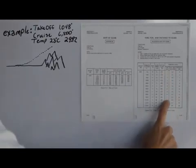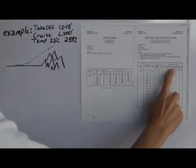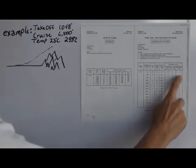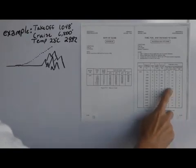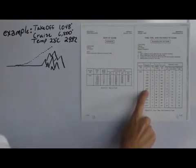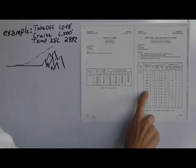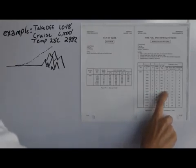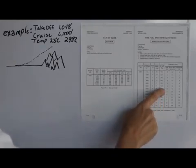Then it gives us our time used to climb that high, and then the fuel used to climb that high, and finally the distance. Since we took off from 1,000 feet and we're going to 6,500 feet, it says that if we went to 6,500 feet, we would have spent 11 minutes doing so.